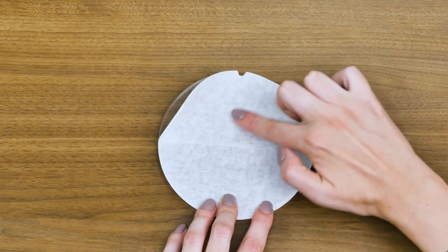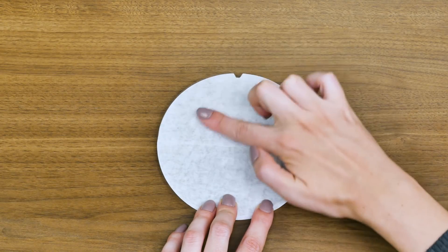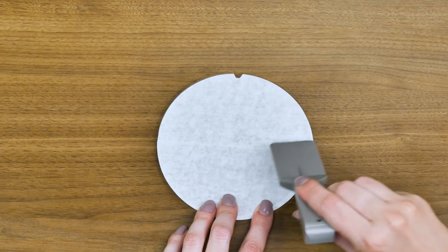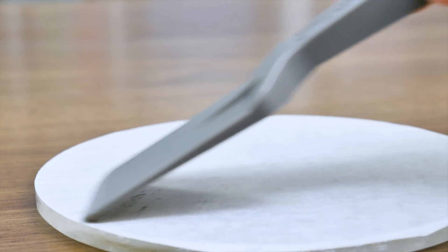Then remove the other half of the liner and rub the remaining tape in place. Again, make sure there are no air bubbles or creases. If your platform tape is not lying completely flat against the platform, your 3D object won't print properly.